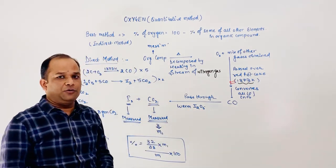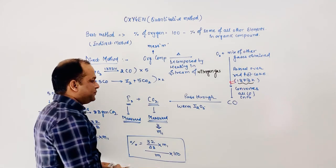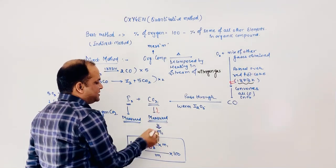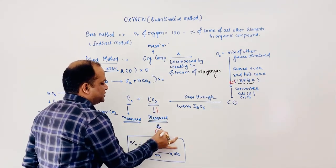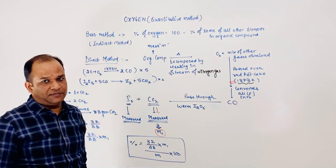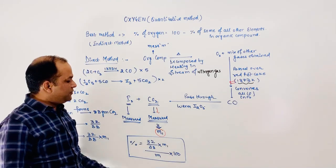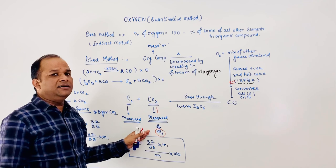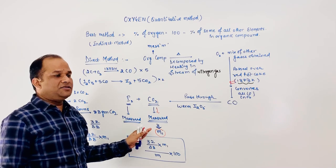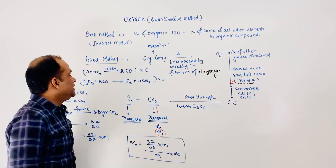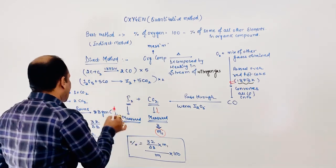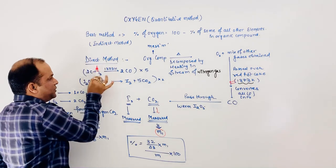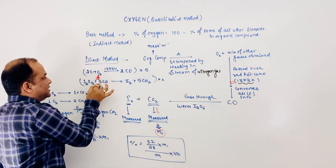This carbon monoxide is then detected by passing through warm I₂O₅ (iodine pentoxide). The carbon monoxide reacts with iodine pentoxide and converts into I₂ plus CO₂. We measure the CO₂ produced — suppose it is M1 grams — and thereby indirectly measure the oxygen.